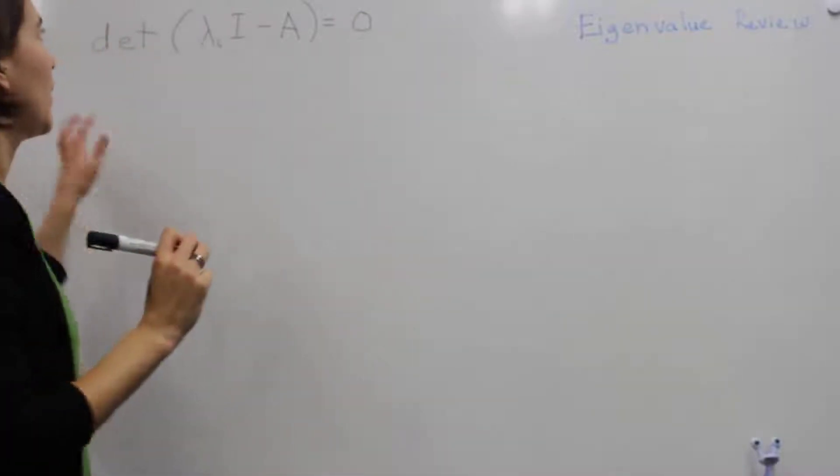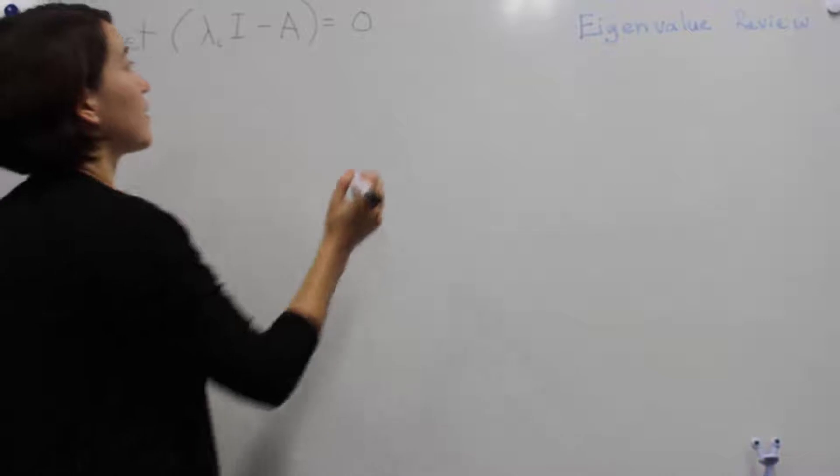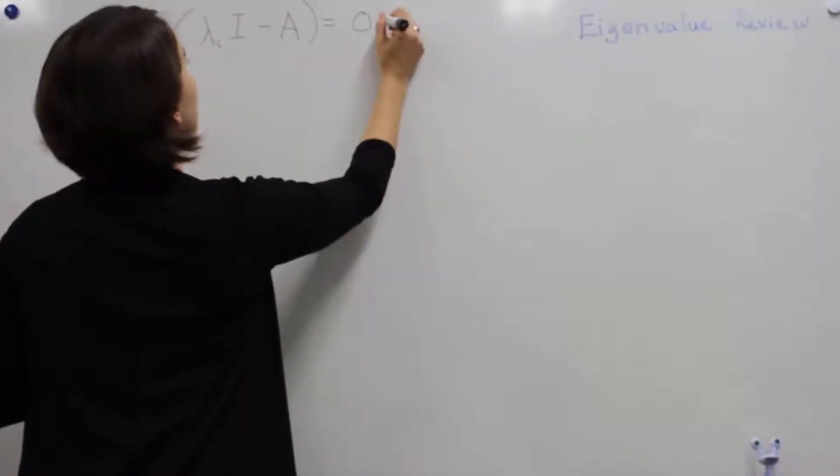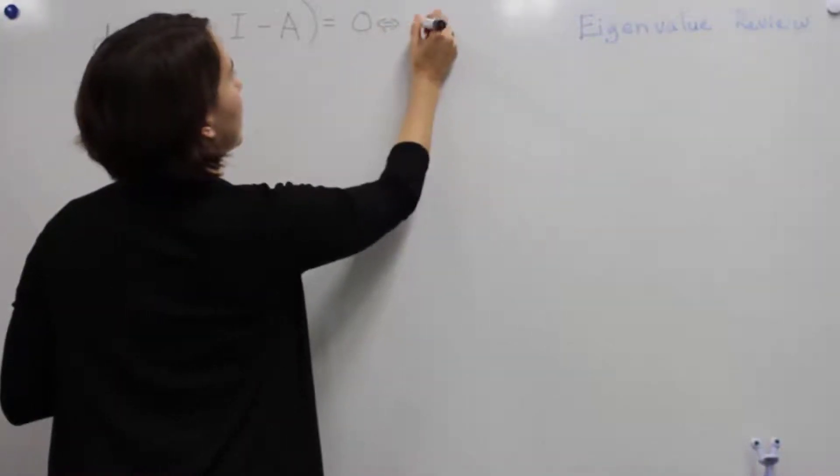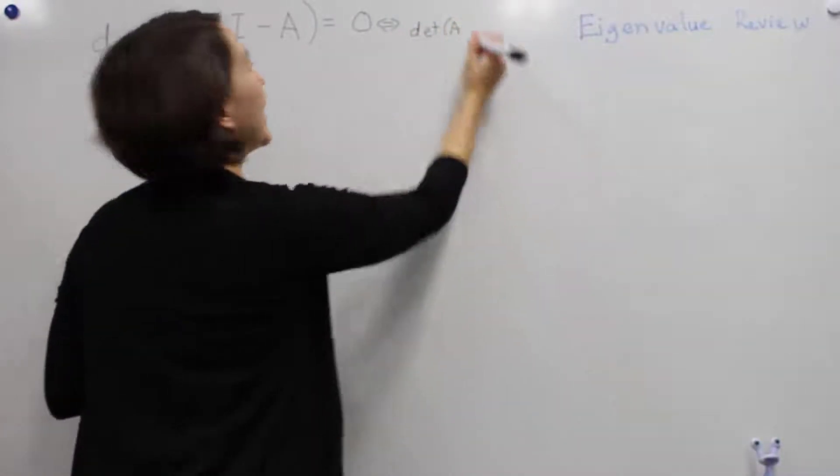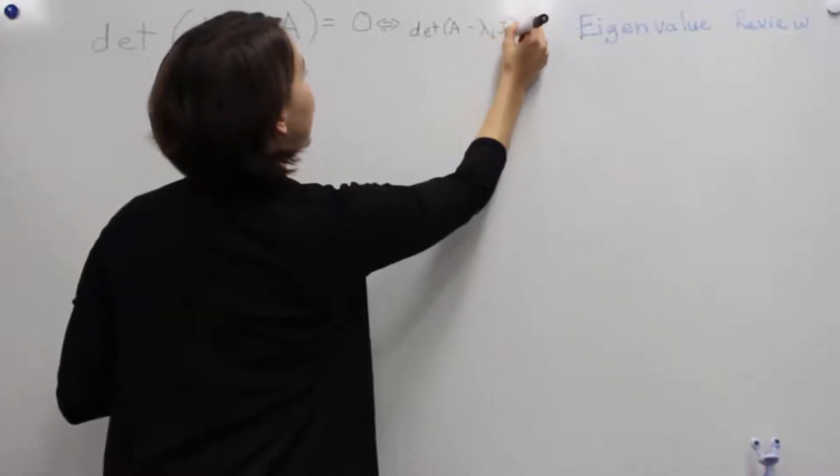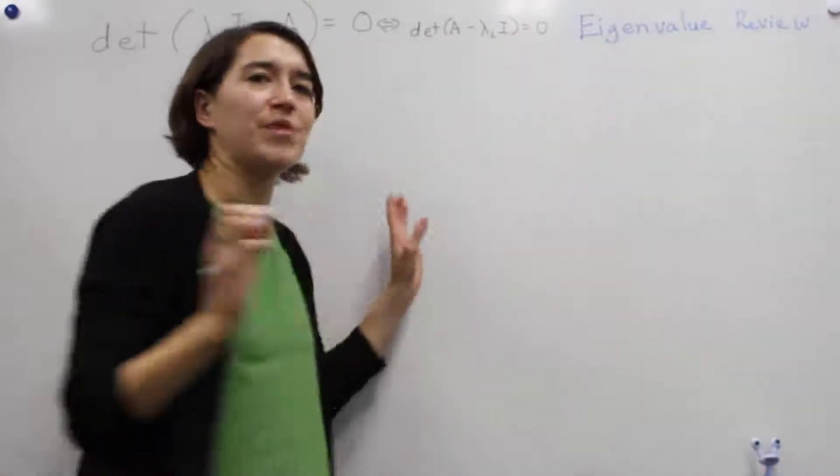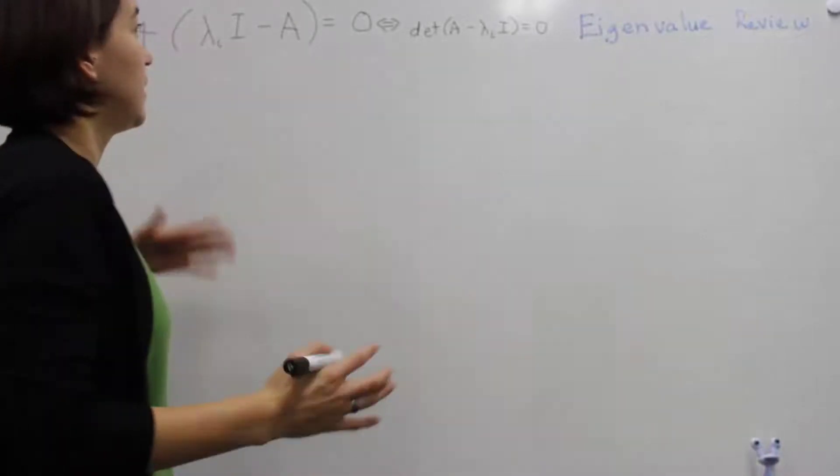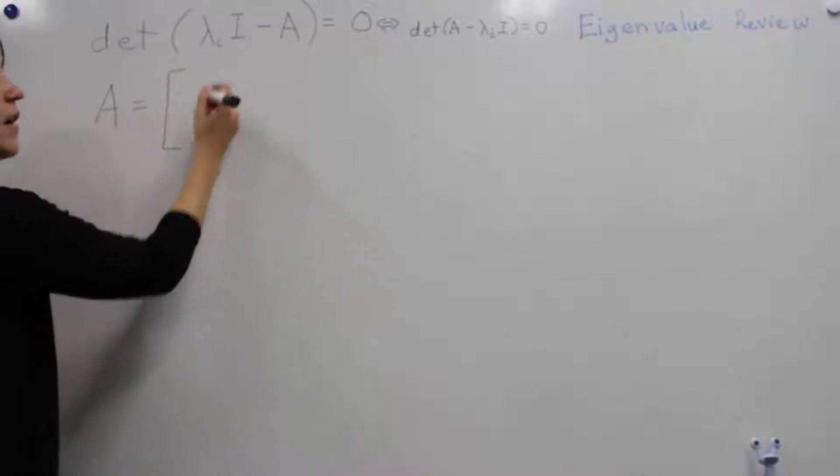That all equals zero. I'll note this is the way our textbook does it, but you can also put these values so this is equivalent to the same thing if you want to use A minus lambda I identity matrix equals zero. These are 100% equivalent.